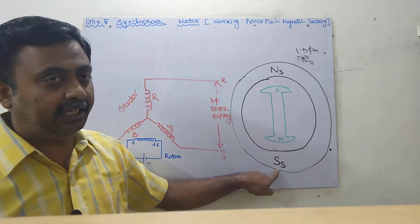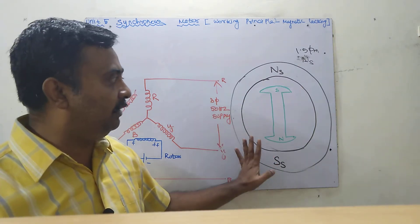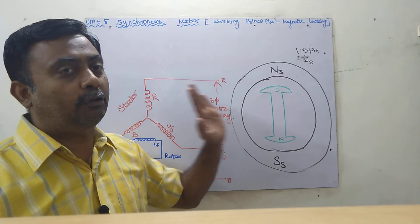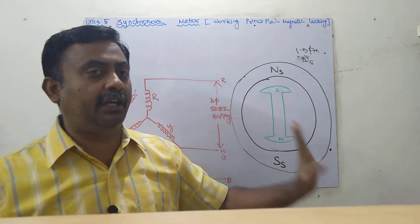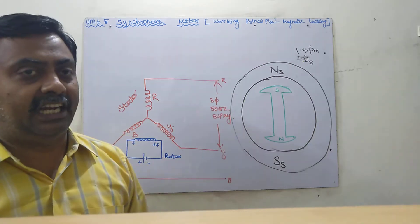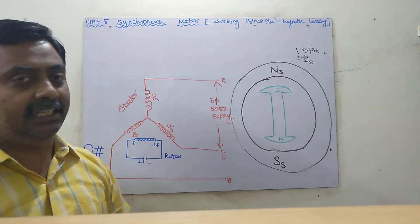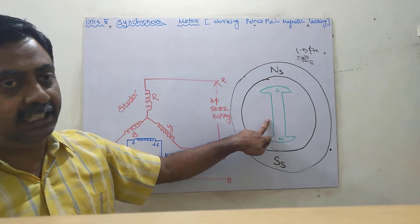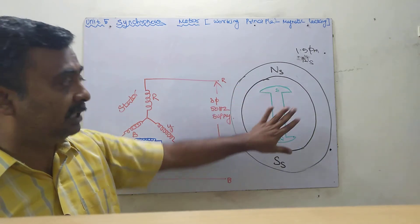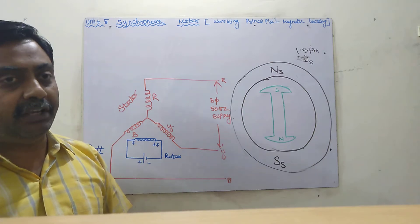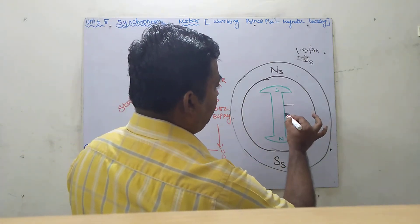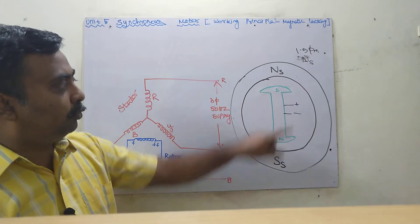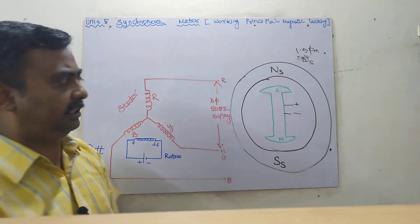This rotating magnetic field revolves at synchronous speed — practically around 1500 RPM for a four-pole machine. Now we place the rotor inside. The rotor is subjected to a change in flux. If we give DC supply to the rotor, it also converts into a magnet with a north pole and a south pole.